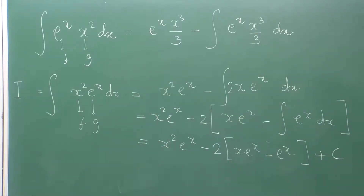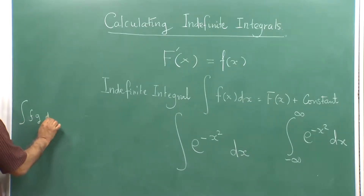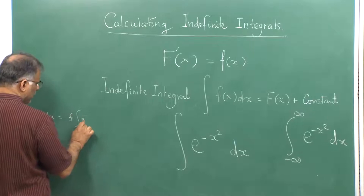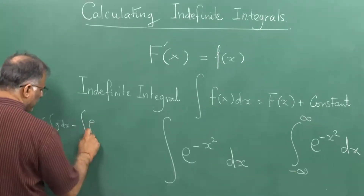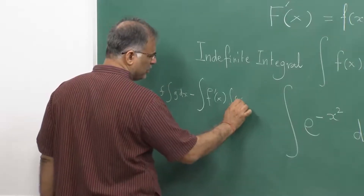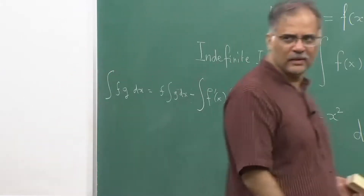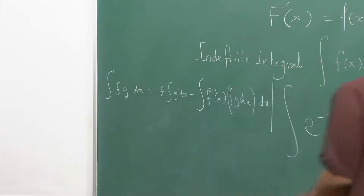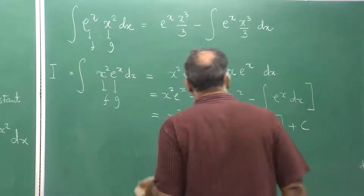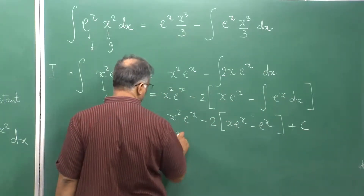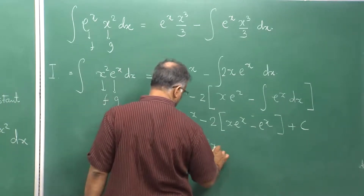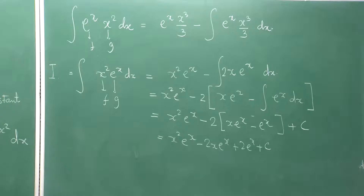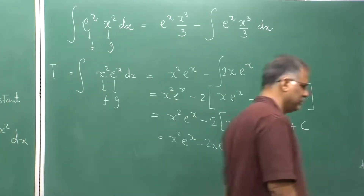The integration by parts formula is: ∫f·g dx = f·∫g dx − ∫(f' · ∫g dx) dx. The result x²e^x − 2xe^x + 2e^x + c can be verified by taking its derivative and checking that it gives back x²·e^x.